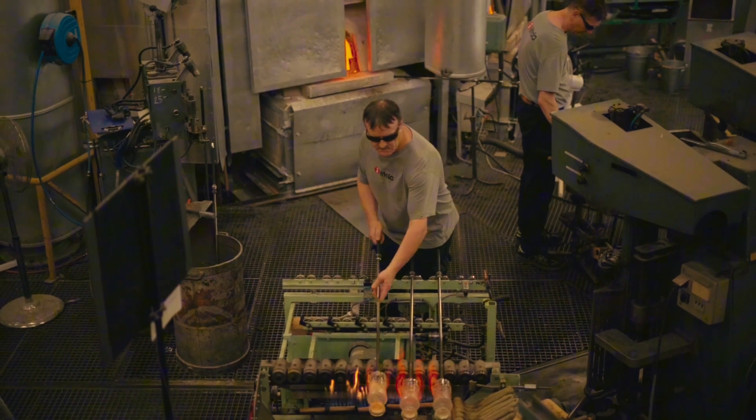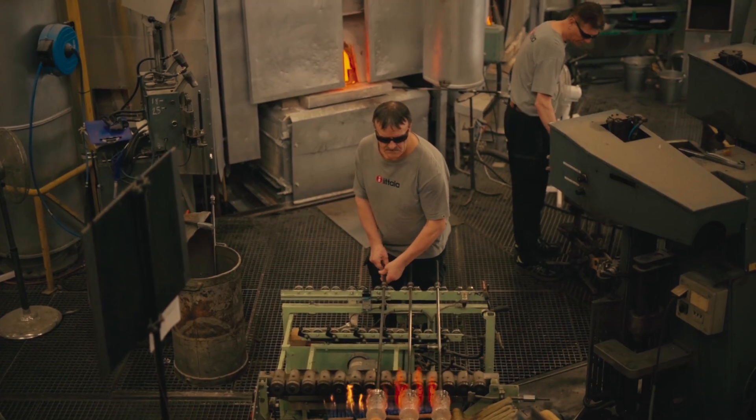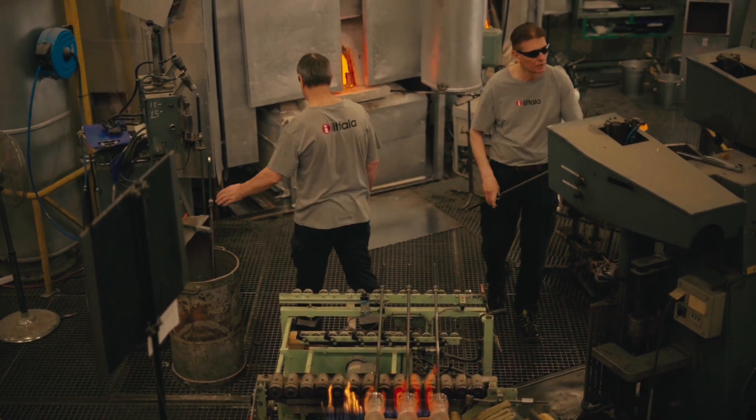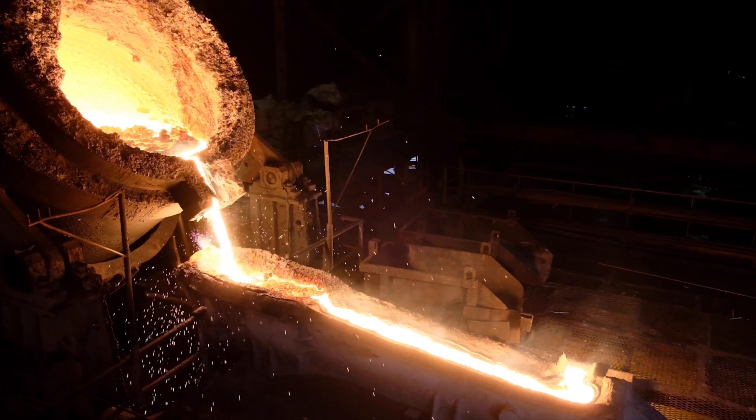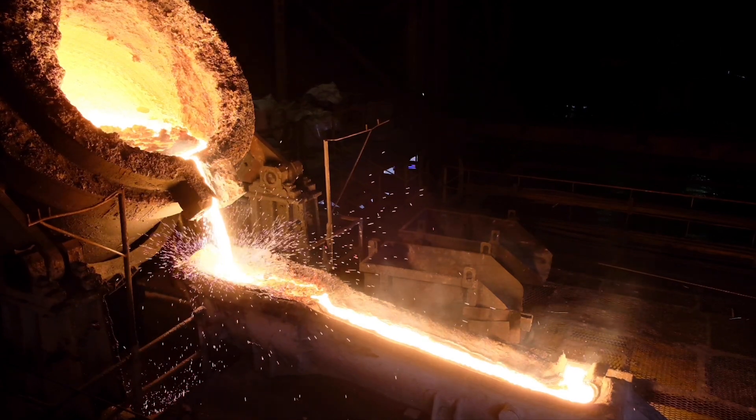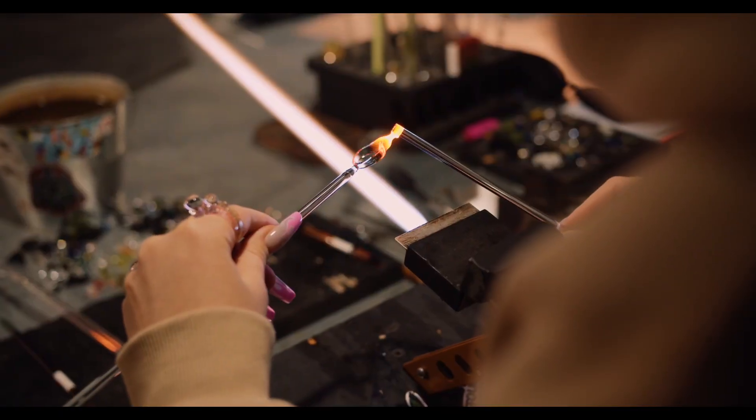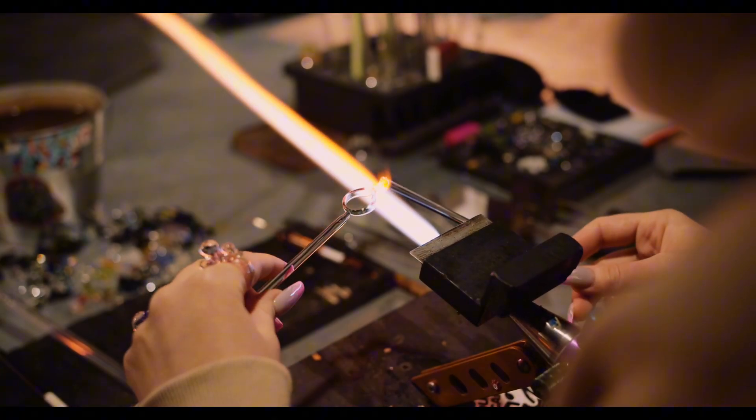But if you heat those crystals hot enough, around 1700 degrees Celsius, the structure collapses. The ordered grid of atoms falls apart, becoming a glowing, molten liquid. This molten form of silica is the foundation of almost all glass.